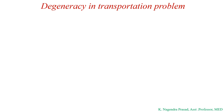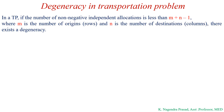In this lecture, we will discuss what is degeneracy in a transportation problem and also discuss one example problem on how to resolve the transportation problem if degeneracy occurs. In a transportation problem, if the number of non-negative independent allocations is less than m plus n minus 1, then degeneracy exists. Here, m equals the number of origins or rows, and n equals the number of destinations or columns.